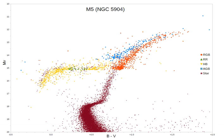In effect, the red clump represents one extreme of horizontal branch morphology — all the stars are at the red end of the horizontal branch — and may be difficult to distinguish from stars ascending the red giant branch for the first time.